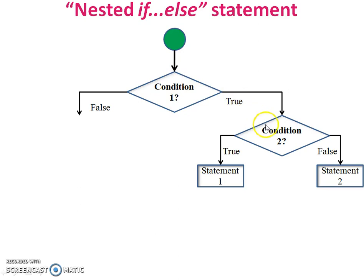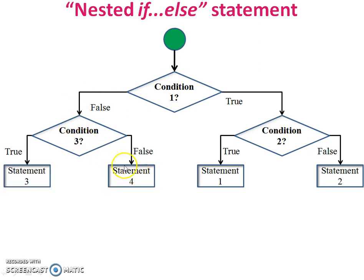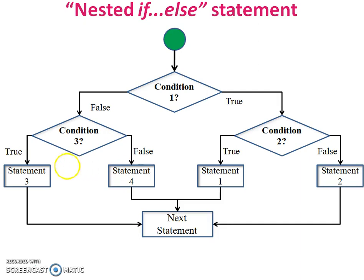When condition one is true and condition two is false, then statement two will be executed. Now condition three. If condition one is false and condition three is true, then statement three will be executed. And if condition one is false and condition three is false, then statement four will be executed. After all, finally the next statement will be executed. Among all the conditions, only one condition will be executed. So stop.